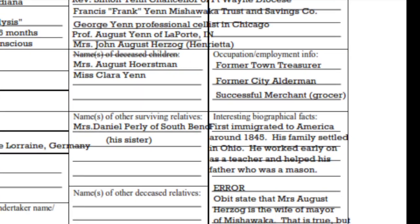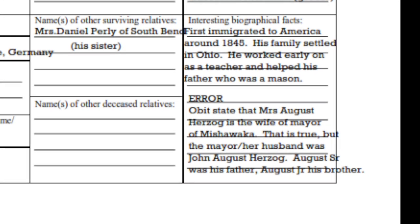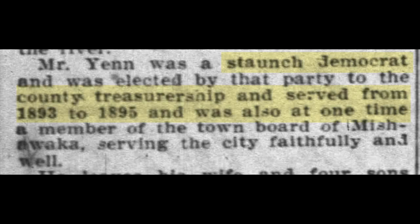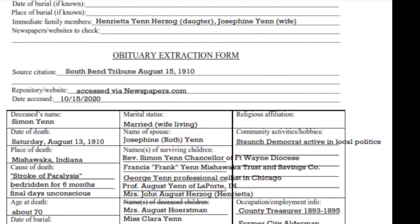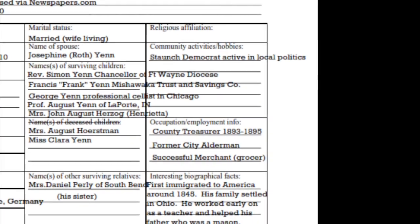Newspapers get information wrong all the time, so we need to make sure that we note this error on our form and always compare the information we find in the obituary against our other research. This next section talks about who Simon was in his community. He was a staunch supporter of the Democratic Party. He was elected to be the county treasurer during the years of 1893 to 1895. He also at one time served on the town board of Mishawaka.